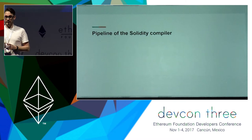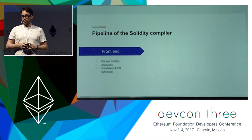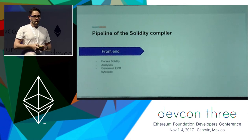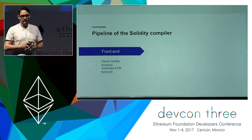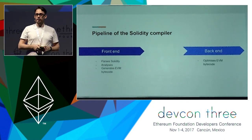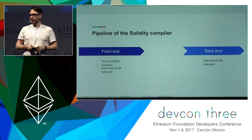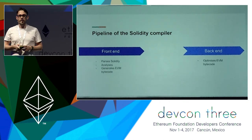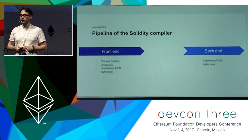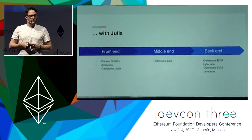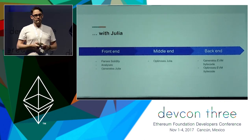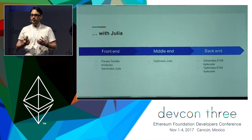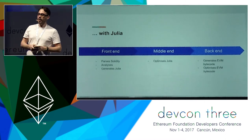Compared to that, Solidity only has two stages, or more like 1.5 stages. There's one stage which does everything, and there's another one which optimizes EVM bytecode — at which point it has no idea what the source code was.